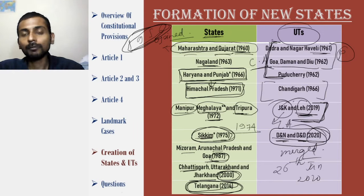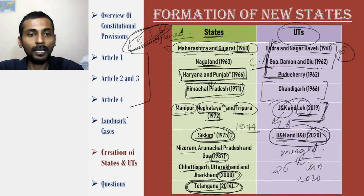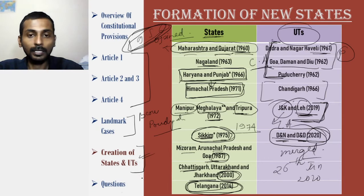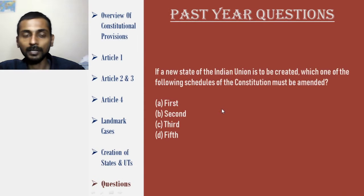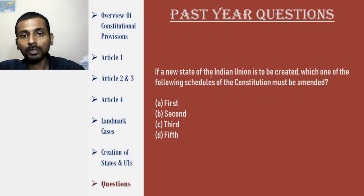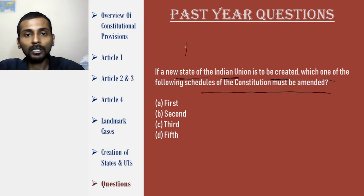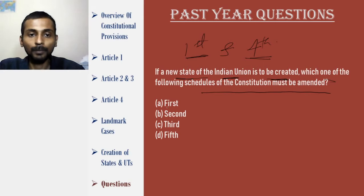We have covered Articles 1 to 4, the two major cases — Berubari Union and Poudyal — and the dates of creation of some UTs and states. Now let's look at some past year questions. The first: 'If a new state of the Union of India is to be created, which one of the following schedules of the constitution must be amended?' Article 4 explicitly talks about the First and the Fourth Schedule — the First deals with territorial extent and the Fourth deals with representation in the Rajya Sabha. Since the Fourth Schedule is not in the options, the answer is A — the First Schedule.